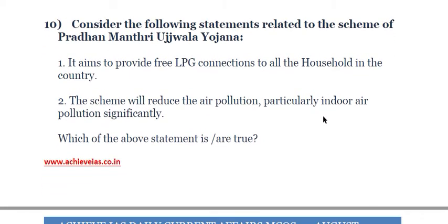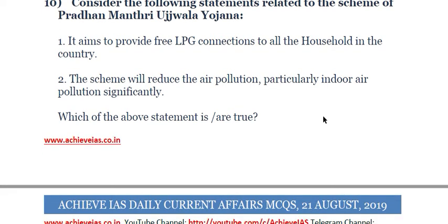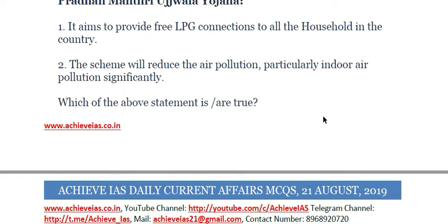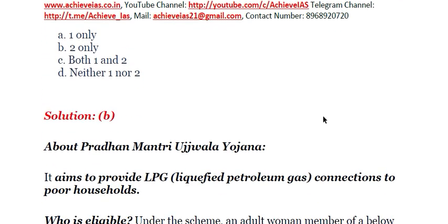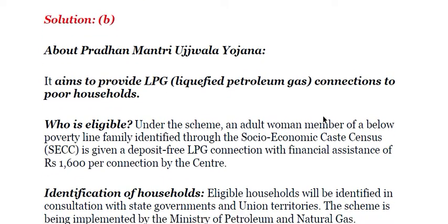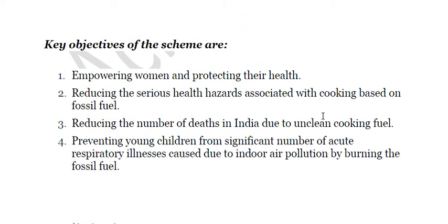The tenth question: consider the following statements related to the scheme of Pradhan Mantri Ujjwala Yojana. First, it aims to provide free LPG connections to all households in the country. Second, the scheme will significantly reduce air pollution, particularly indoor air pollution. Only the second statement is correct. The first statement is incorrect because LPG connections are provided only to households below the poverty line — a one-time free connection. The families eligible are BPL families identified under the Socioeconomic and Caste Census, with financial assistance of Rs. 1,600 per connection. The answer is B.